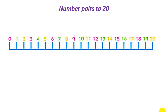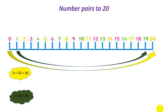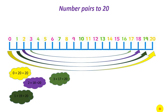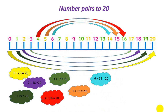Before finding the four facts for number 20, we are going to learn the number pairs for number 20. Starting with 0 and 20, then 1 and 19, 2 and 18, 3 and 17 — which gives me 20. Then 4 and 16, and 5 and 15.